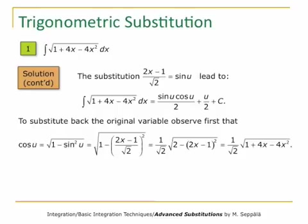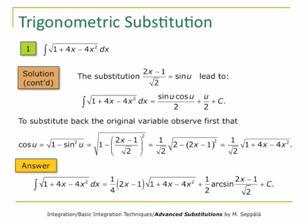Expanding the product under the square root gives (1/√2) · √(1 + 4x − 4x²). Substituting back into the answer, the integral of √(1 + 4x − 4x²) dx equals (1/4)(2x−1)·√(1 + 4x − 4x²) + (1/2) arcsin((2x−1)/√2) + C.